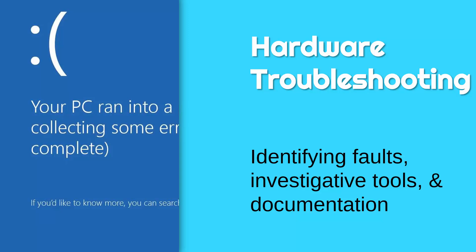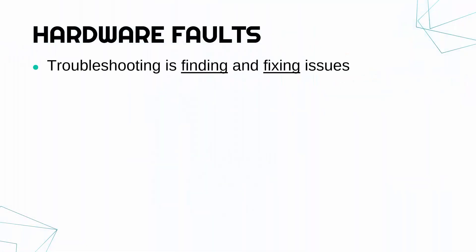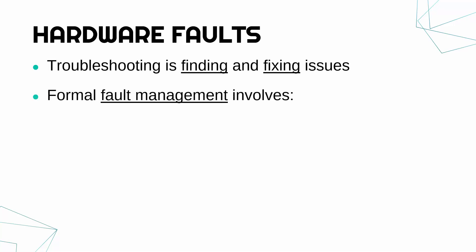We're going to talk about some troubleshooting techniques to do with hardware, including identifying faults, how you can investigate faults, and what sort of documentation might get used. Troubleshooting is finding and fixing issues — two parts: you've got to find the issue first and then try and fix it. Lots of IT jobs are based around troubleshooting, supporting people in a company or customers to find and fix errors, and it's not an easy job.